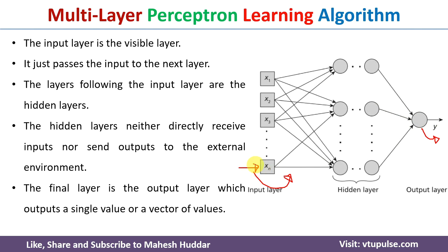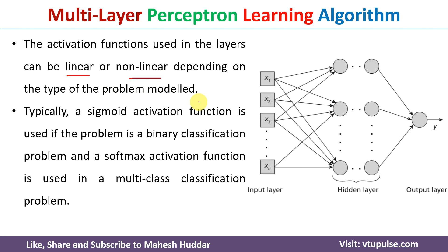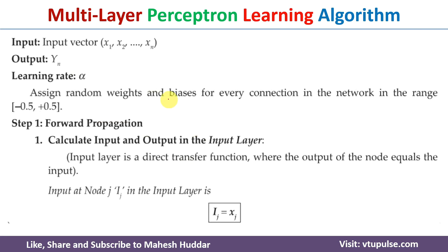So input is given to the network through the input layer and output is received from the output layer. For each neuron in the hidden layer we need to use an activation function. There are multiple kinds of activation functions — linear, non-linear, and so on. Based on the problem definition we use different activation functions. For binary classification we typically use the sigmoid activation function, and for multi-class classification we use the softmax activation function.